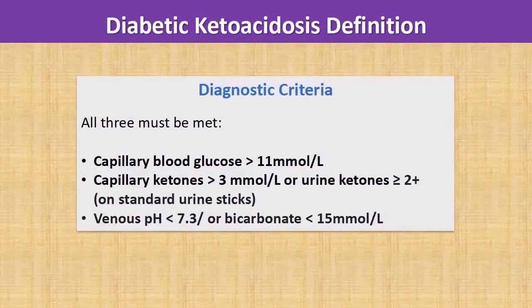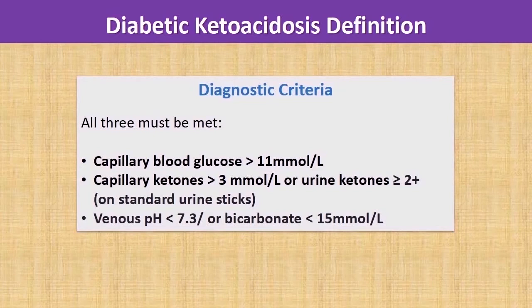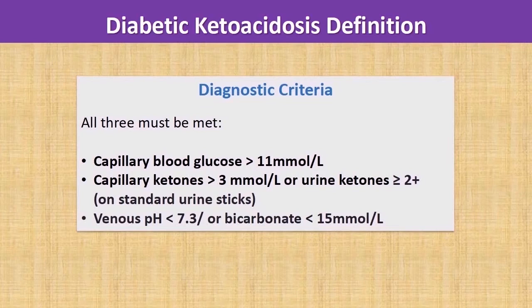This is the diagnostic criteria for diabetic ketoacidosis. It is represented by a triad — all three criteria need to be present to diagnose DKA. The first criterion is the presence of hyperglycemia, defined as blood glucose more than 11 mmol/L. The second and third criteria are the presence of ketosis and metabolic acidosis.